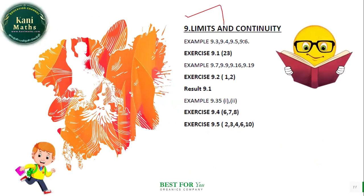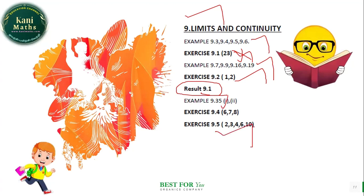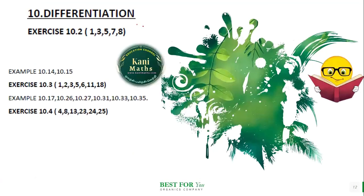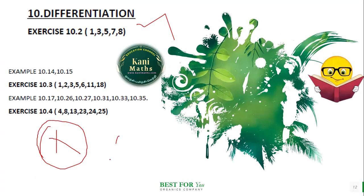Chapter 9 is limits and continuity. Exercise 9.3, 9.4, 9.6. Exercise 9.4: 23 sums. Example 9.7, 9.9, 9.16, 9.19. Exercise 9.2: substitution questions 1, 2. Exercise 9.1 — check the examples and problems. Exercise 9.5: questions 2, 3, 4, 6, 10. Chapter 10 is differentiation. Differentiation can be approached in this chapter — if you don't understand differentiation, you can build that understanding. You can see the concept twice, then attempt some questions to make differentiation easier.